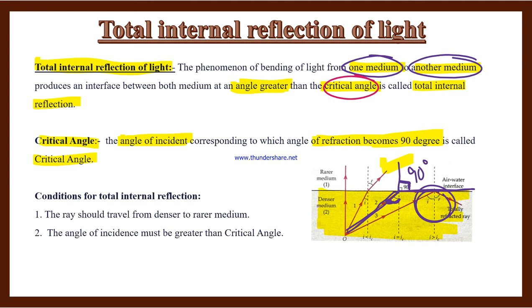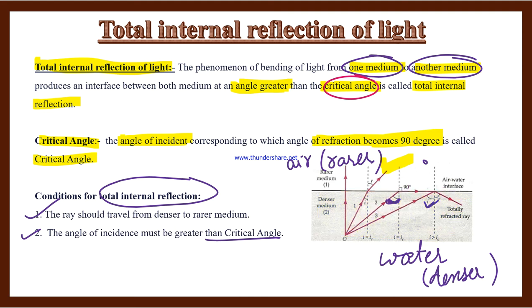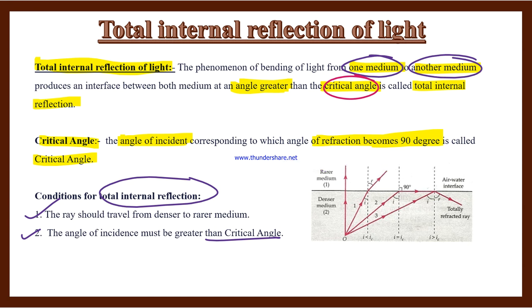The conditions for Total Internal Reflection are: Number one — the ray should travel from denser to rarer medium. For example, water is denser and air is rarer. Number two — the angle of incidence must be greater than the critical angle. If the angle is smaller or equal, total internal reflection will not occur.